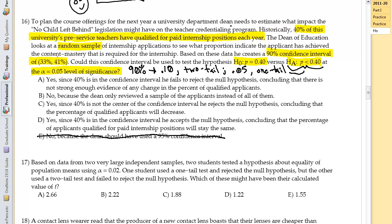Now, 40 is in here. So we would not reject this. We're looking for a fails to reject. Do we ever accept the null hypothesis or do we fail to reject? So D is out because the language is bad.